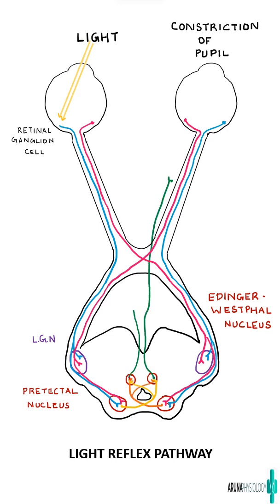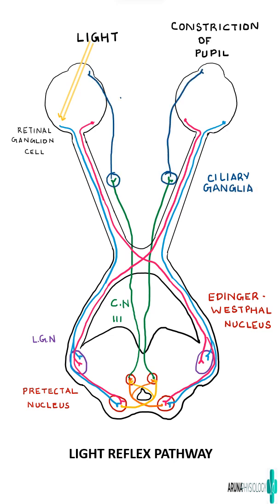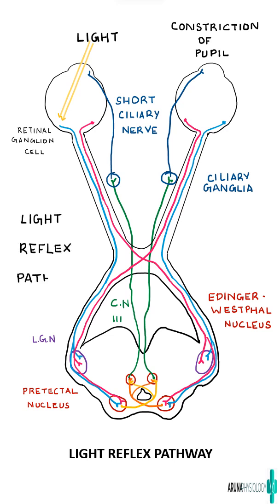From the Edinger-Westphal nucleus, via cranial nerve 3 — the oculomotor nerve — the signal reaches the ciliary ganglion. Finally, the short ciliary nerves are activated, which in turn causes constriction of the pupil. That is the light reflex.